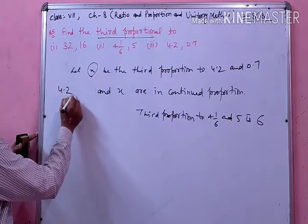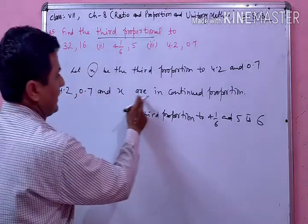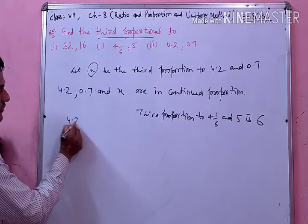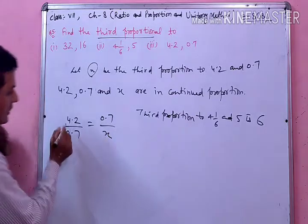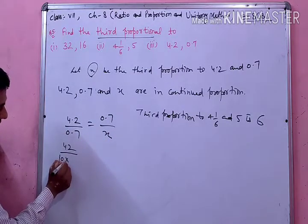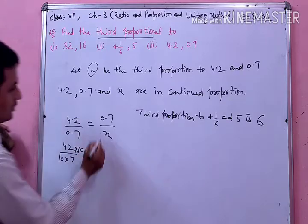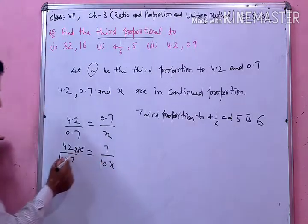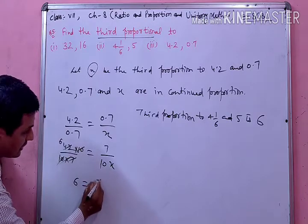जैसा कि हमने पहले दो parts किये वैसे यहां करेंगे: 4.2, 0.7 and x are in continued proportion. Continued proportion है तो first upon second equal होगा second upon third. तो decimal हटाएंगे — 42 upon 10 और 7 upon 10. ऊपर चला जाएगा, यह rule पहले भी बताया है। तो यह हो जाएगा 7 upon 10x. Ten से ten cancel हो जाएगा, seven से 42 six किसके equal आ गया।